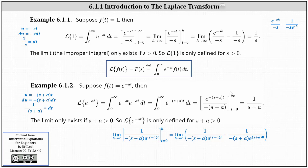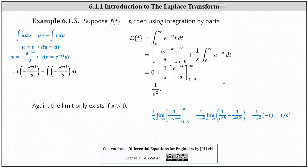Let's look at one more example. Here f of t is equal to t, and therefore the Laplace transform of t equals the integral from zero to infinity of e to the power of negative st times t dt, which requires integration by parts. We set u equal to t and dv equal to e to the power of negative st dt. Differentiating, du equals dt. Integrating, v equals negative e to the power of negative st divided by s.